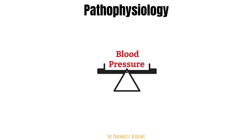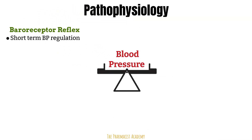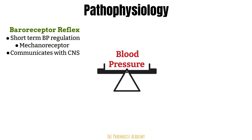In response to acute changes in blood pressure, the body responds through baroreceptors located within blood vessels. Baroreceptors are responsible for short-term blood pressure regulation. They are a type of mechanoreceptors that become activated by the stretching of the vessel. There are baroreceptors that respond to low blood pressure and baroreceptors that respond to high blood pressure. When activated, the receptors communicate with the central nervous system to correct the changes in blood pressure — this is known as the baroreceptor reflex.